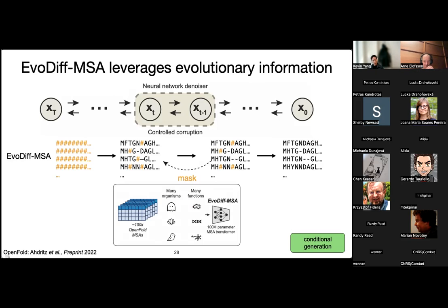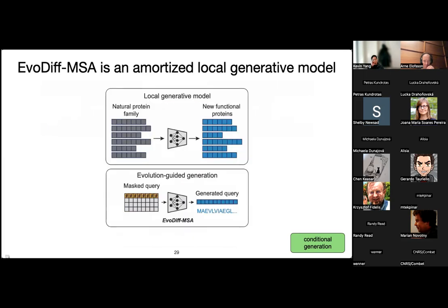We're going to use EvoDiffMSA first as an amortized local generative model. For a while now, people have trained local generative models where you take a natural protein family, obtained by taking a query sequence and doing a homology search, and run it through some model — the simplest thing is to sample from column frequencies independently — and hopefully get new functional proteins that are diverse from each other and from the natural family. When I say EvoDiffMSA is an amortized local generative model, I mean we can do evolution-guided generation by taking that natural protein family, masking out the query, and regenerating it. It's amortized because we've already trained on 100,000 MSAs, so we don't have to train a new model for every family.